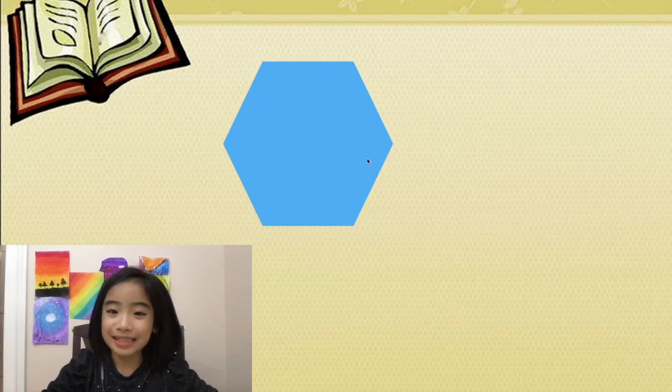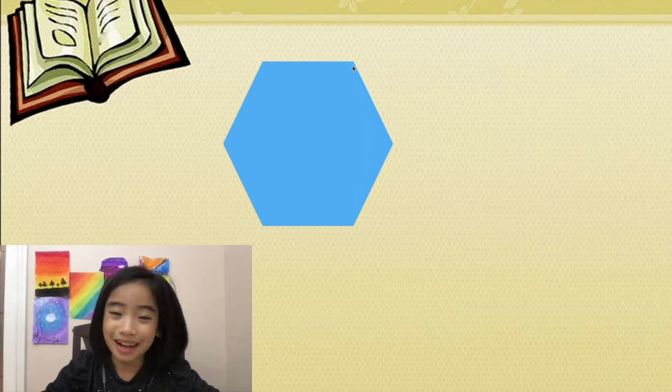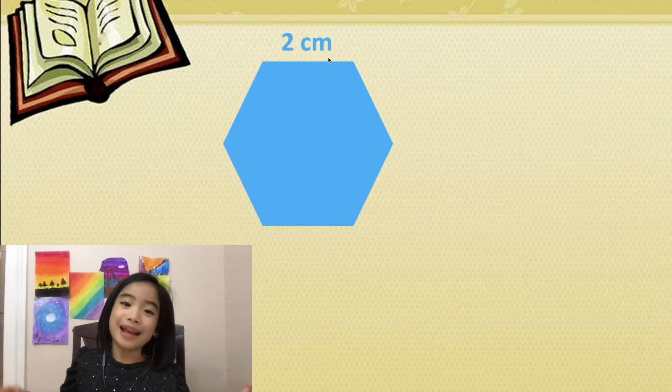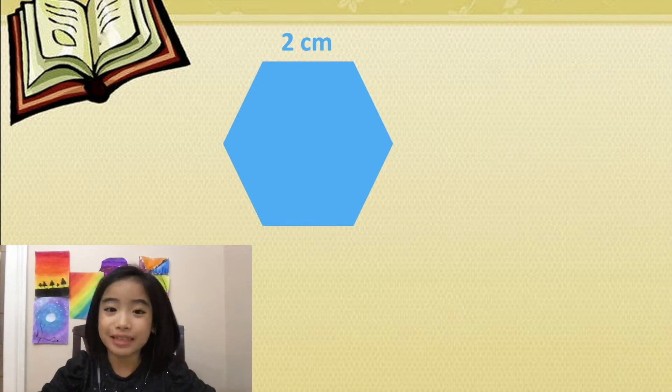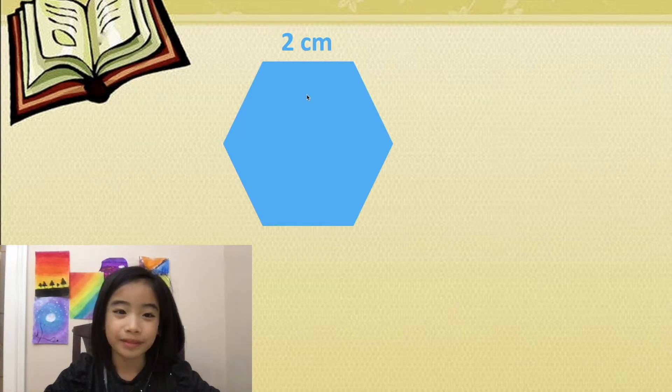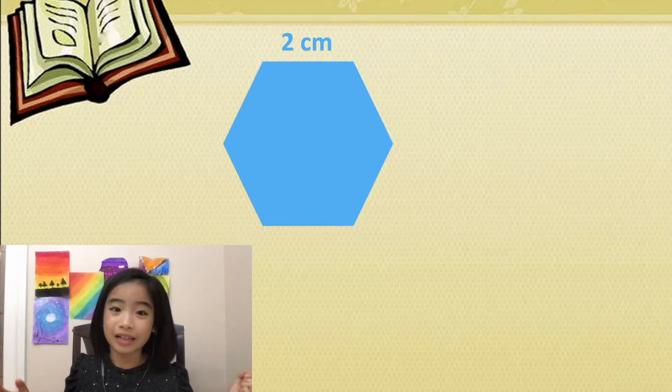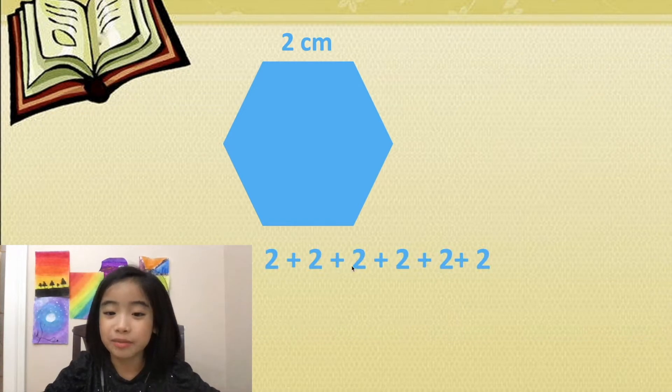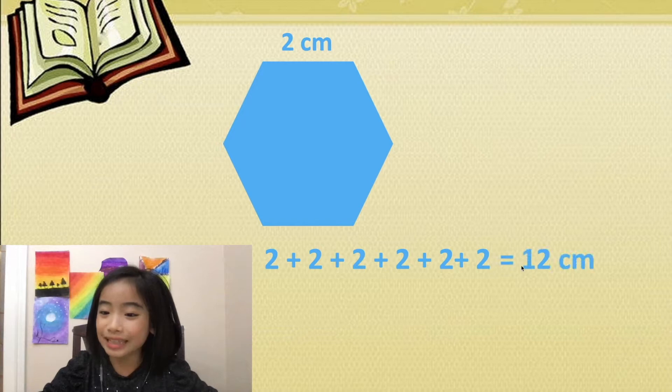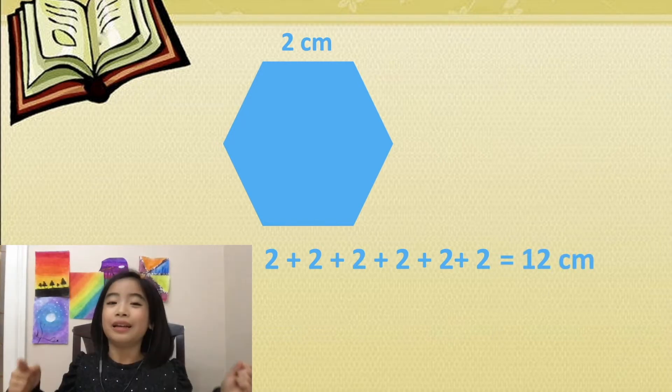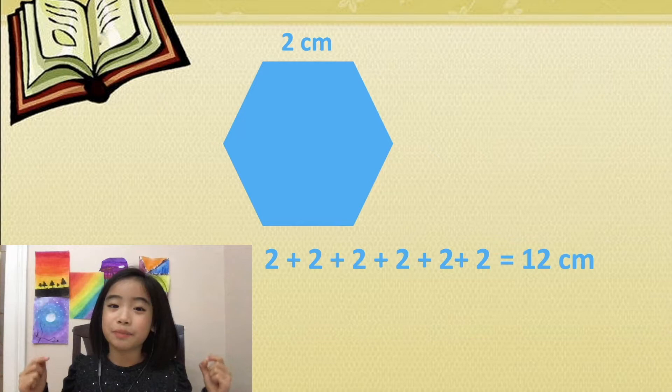Next, let's look at this blue hexagon. One side is two centimeters. Now let's figure out the perimeter of this hexagon. We know that all sides of hexagons are equal, so we have two plus two plus two—six twos added together—and we get 12 centimeters. The perimeter of this blue hexagon is 12 centimeters.